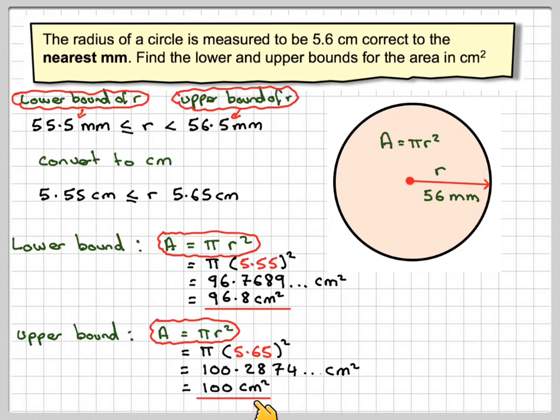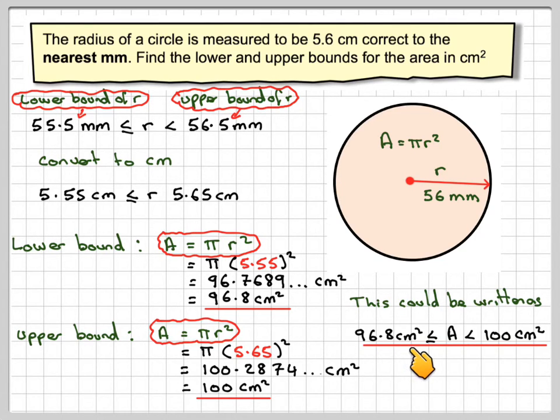You're advised in IGCSE to write down the full calculator value and then the rounded off version. This could be written as the area being between 96.8 centimeters squared to 100 centimeters squared, correct to three significant figures. And the point of being accurate, this is actually quite a wide range. So just a little small error in measurement can result in a big error in area.